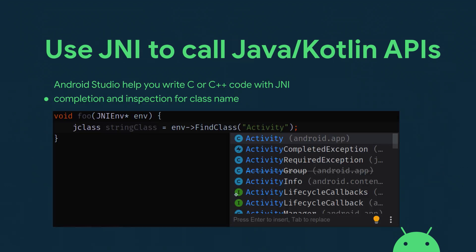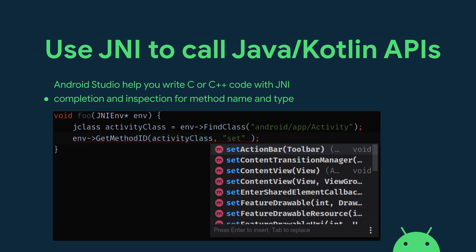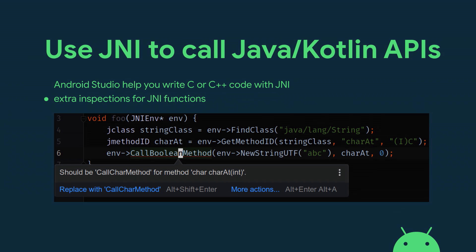For example, we implemented completion and inspection for the parameters of the FindClass call, and similarly for GetMethodID, where we complete the method name and type for you, and likewise for GetFieldID. We also implemented specific checks custom to the semantics of these special functions in the JNI header. For instance, if you're calling the charAt method from the String class — which returns a char — the right flavor to call is CallCharMethod rather than CallBooleanMethod. That's a mistake, and the IDE knows about it.